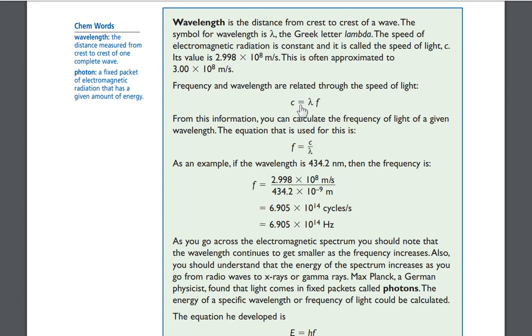C equals lambda f. From this information, you can calculate the frequency of light of a given wavelength. The equation that is used for this is frequency is equal to the speed of light divided by lambda, the wavelength.